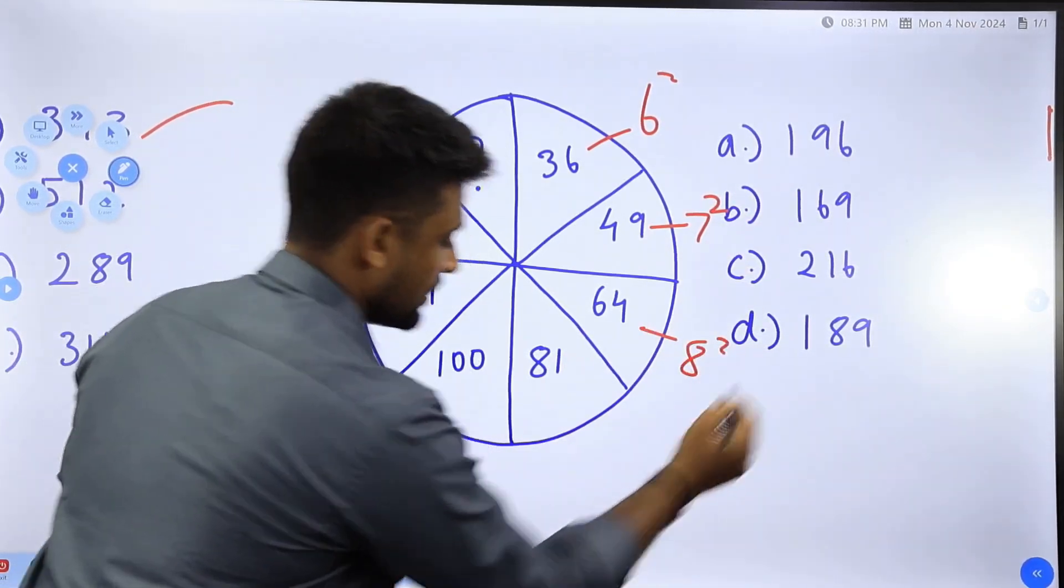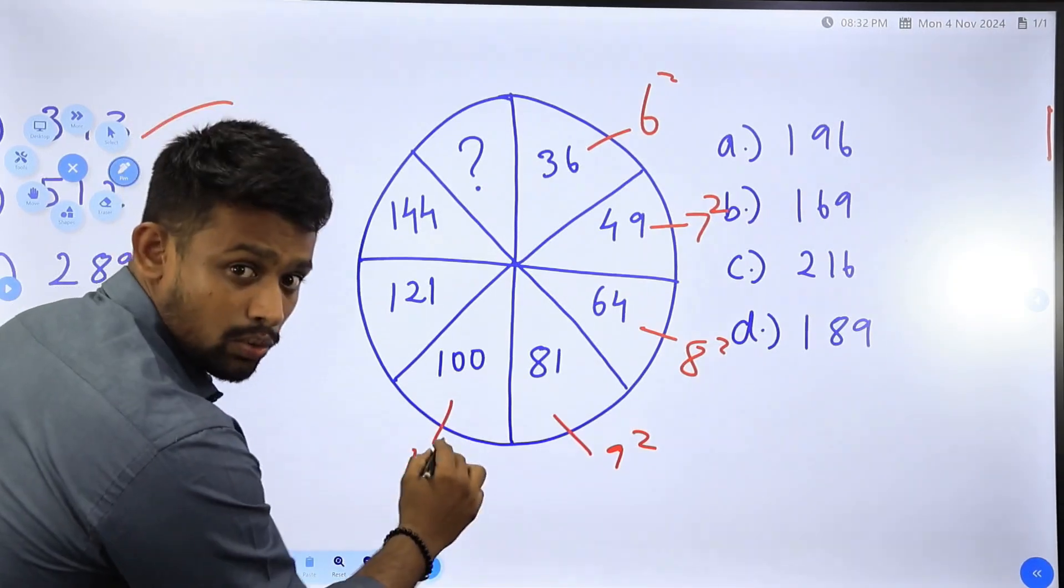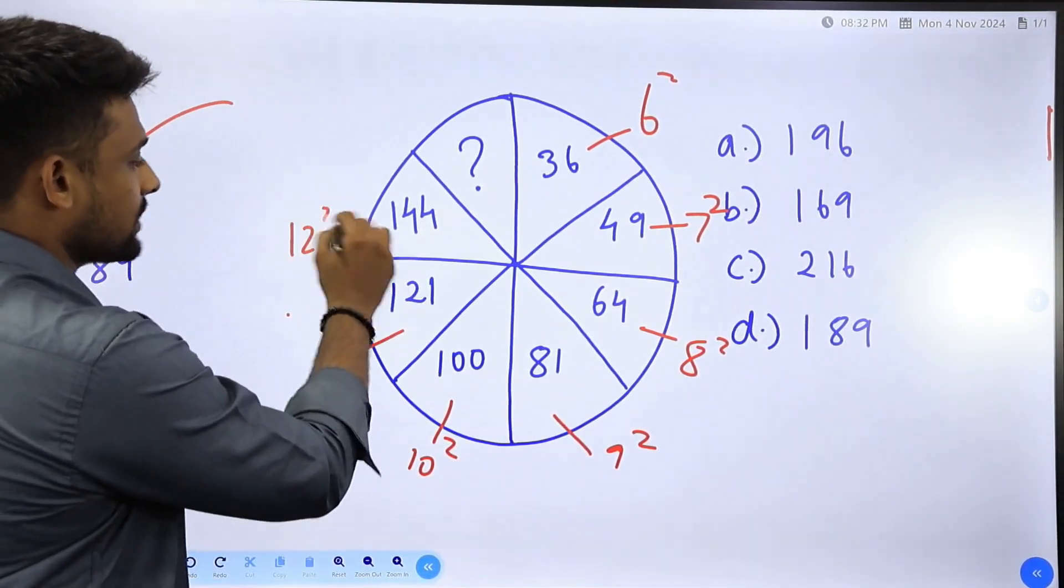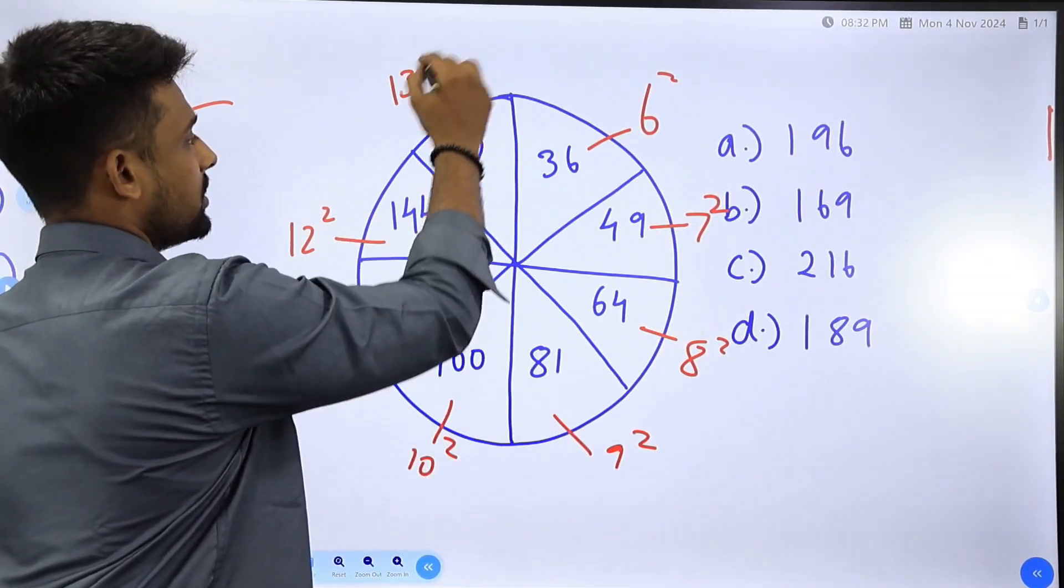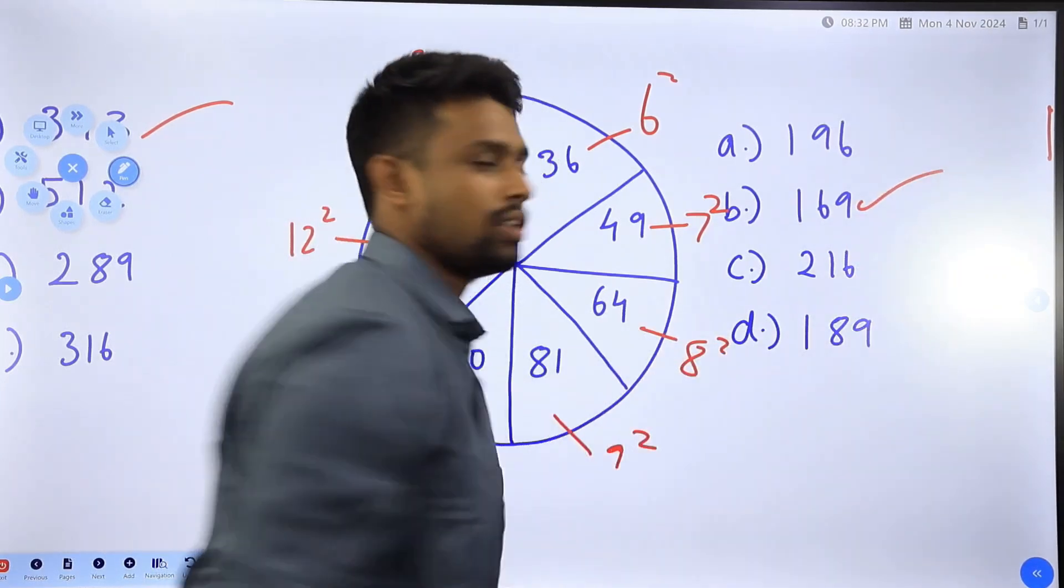81 is 9 square, 100 is 10 square, 121 is 11 square, 144 is 12 square. The next number should be a square of 13. So 13 square is 169, that is your answer.